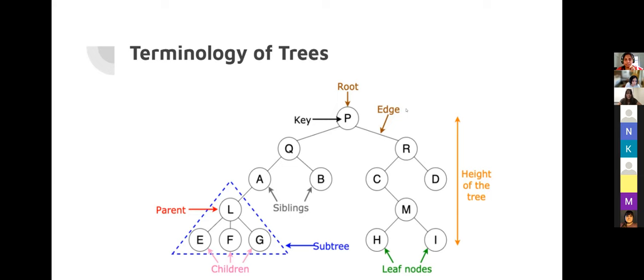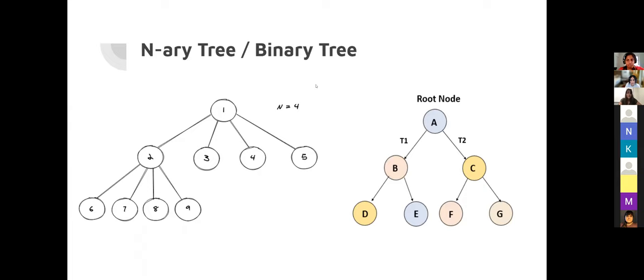Moving to different sorts of trees: an N-ary tree has N, which defines the maximum number of children a node can have — so four or fewer for a 4-ary tree. When N is two you have a binary tree, which is the most popularly used. Whatever you learn about binary trees can easily be extended and applied to an N-ary tree.